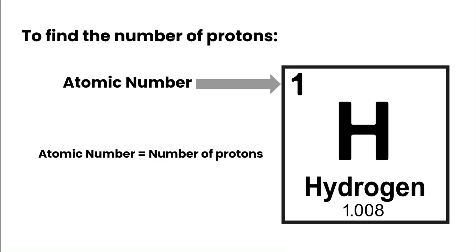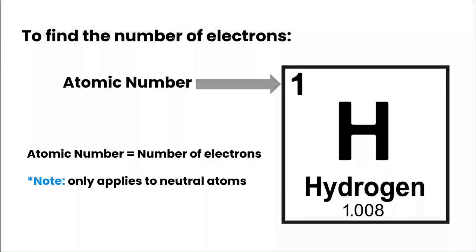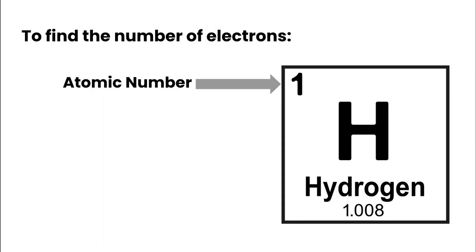In hydrogen, the atomic number is one, so the number of protons is one. To find the number of electrons in a neutral atom, the atomic number is also equal to the number of electrons. Keep in mind this only applies to neutral atoms — in a different video we'll look at what happens when atoms aren't neutral. When something's neutral, the positive and negative charges balance each other out, so they must be equal. For hydrogen, the number of electrons is also equal to one.